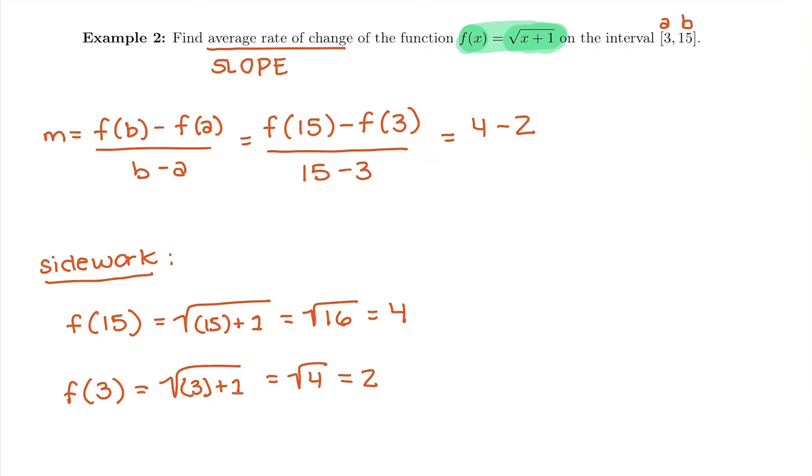So we have f(15) is 4, minus f(3) is 2, all over 15 minus 3 is 12. So 4 minus 2 is 2 over 12. There's our average rate of change.